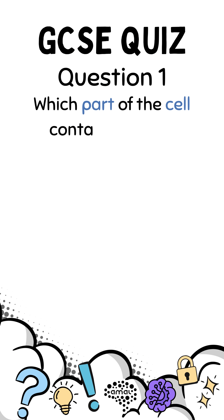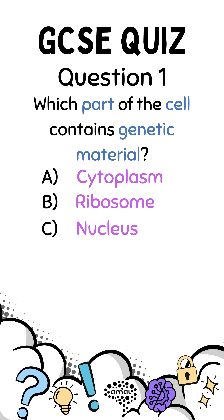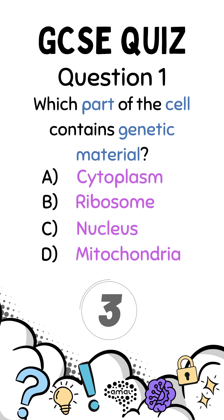Question 1: Which part of the cell contains genetic material? A. Cytoplasm, B. Ribosome, C. Nucleus, D. Mitochondria.